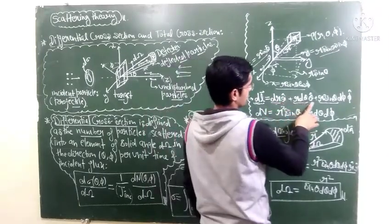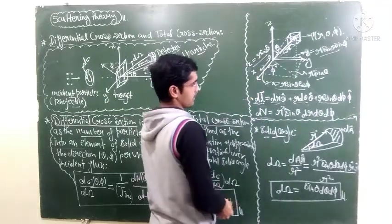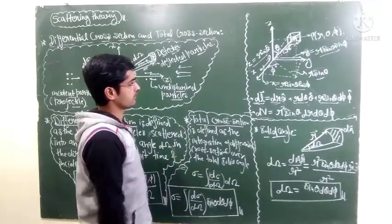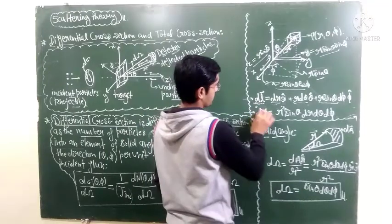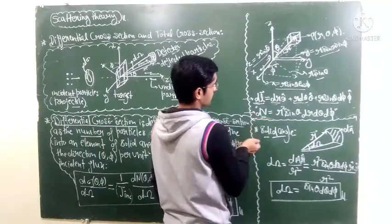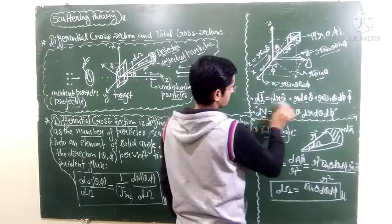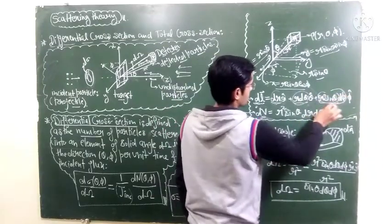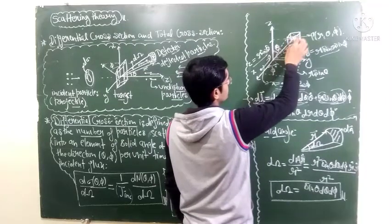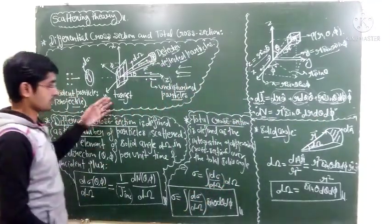Any line element in the spherical coordinate system can be written as: dr in the r-direction, r dθ in the theta-direction, and r sinθ dφ in the phi-direction. These three vectors together give the line element. The volume element — the volume of an infinitesimal element — is r² sinθ dr dθ dφ, obtained by multiplying the three terms. We will use these formulas when integrating quantities in the next lecture.